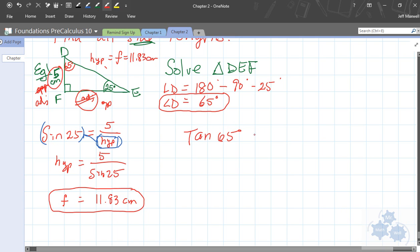So, tan of 65 equals the opposite side, which we don't know yet, divided by the adjacent side, which is 5. You guys okay with that? So, 5 times tan of 65 equals the opposite side, which in this case is actually little d.